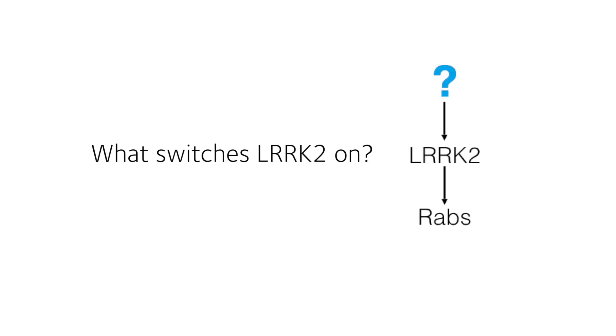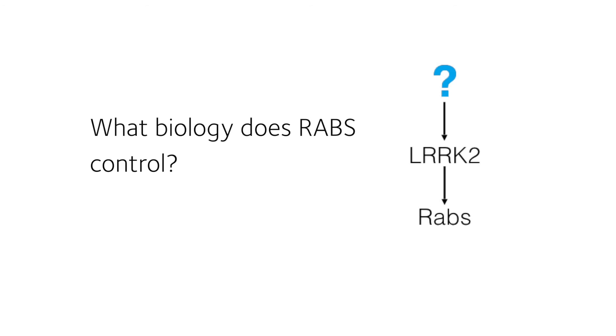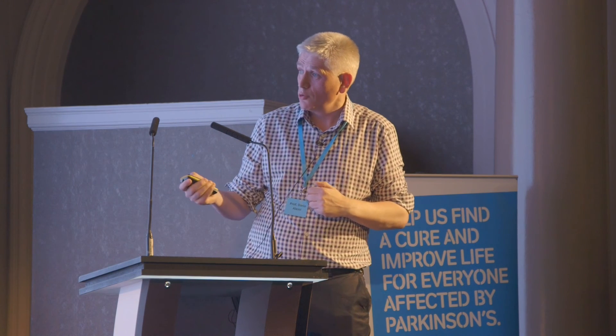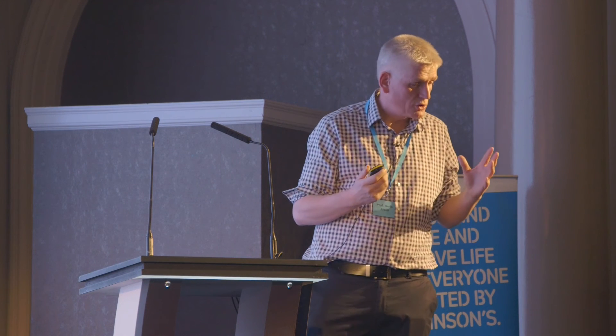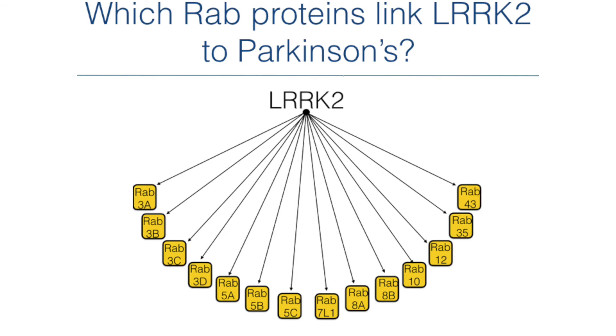There's a huge amount of evidence emerging that RABs are really at the heart of understanding Parkinson's disease. But any exciting discovery in biology doesn't solve the problem — it always leads to ten more exciting questions. We now know mutations activate LRRK2 to phosphorylate RABs, but I'm very interested in whether environmental factors, infectious agents, or other things that cause Parkinson's disease also lead to activation of LRRK2. Although we know RABs control vesicular movement, we still don't fully understand precisely what key biology RABs are controlling in cells.